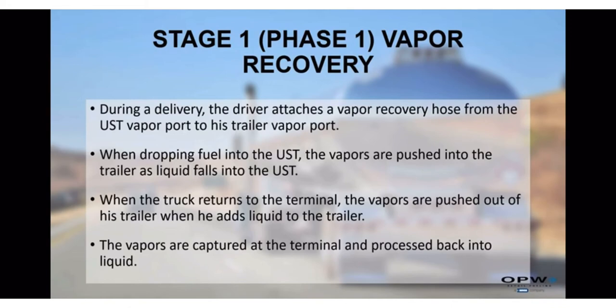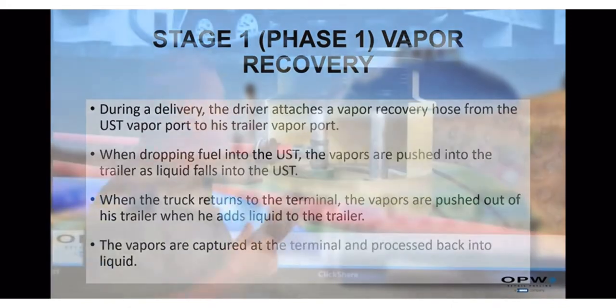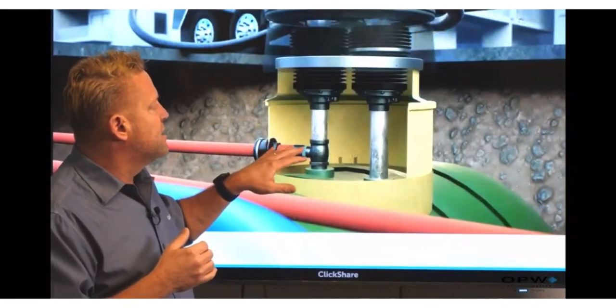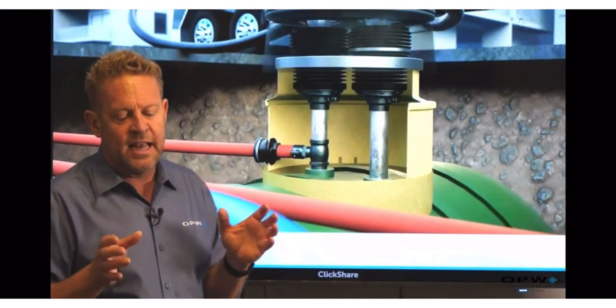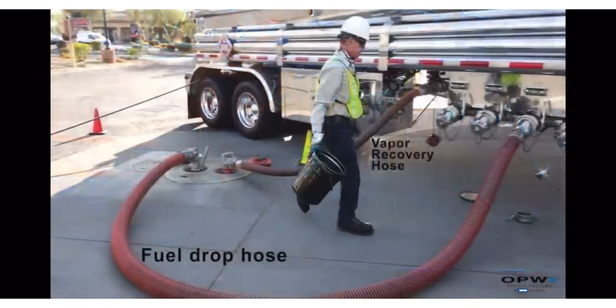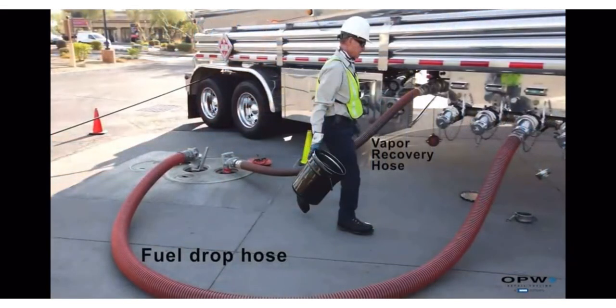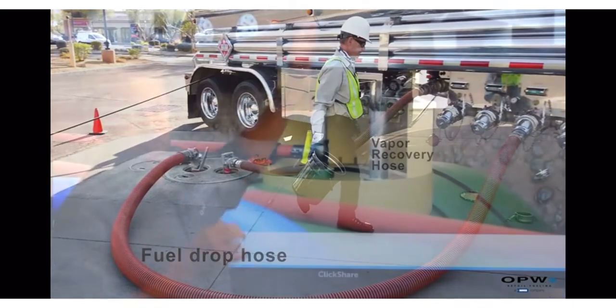This whole process of collecting vapors from the tank during a drop is what we call stage one vapor recovery. What I'm showing here is what we refer to as a two-point fill. One point we're dropping, and the second point we're actually collecting the vapor, so we have two different hoses.